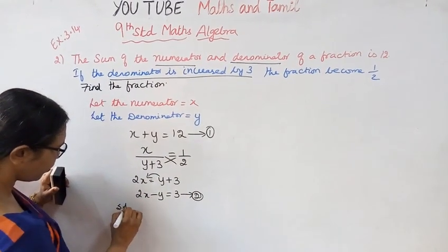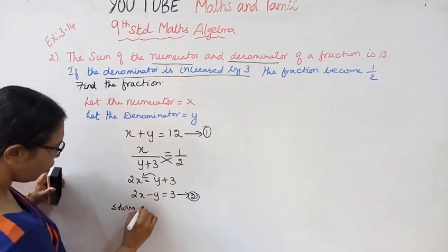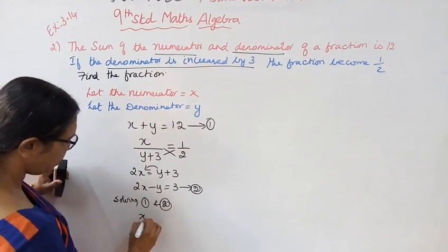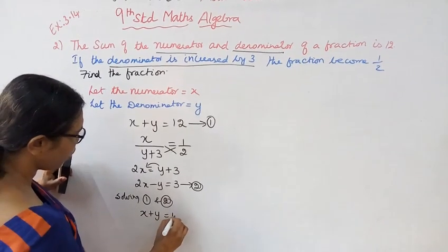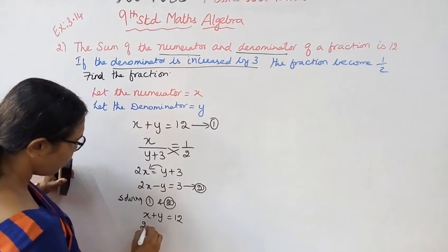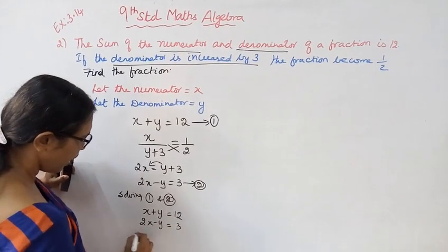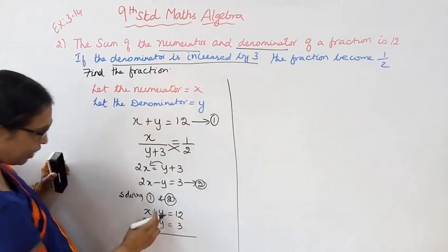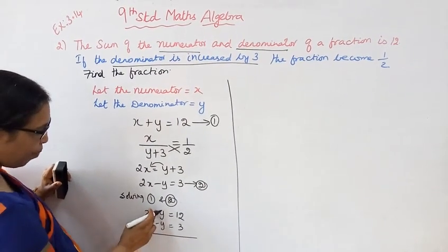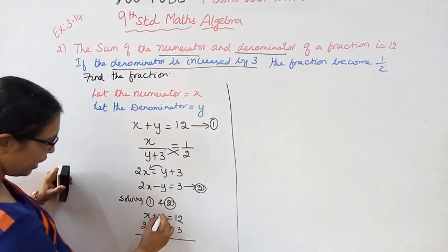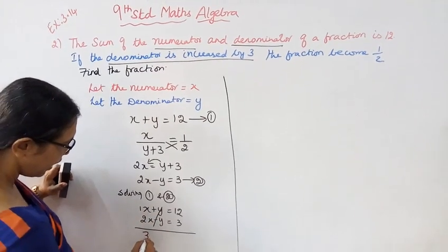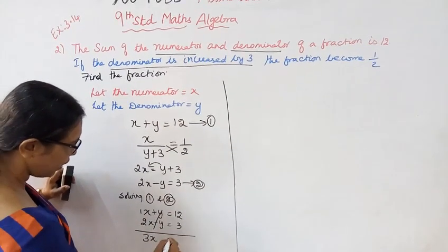Now solving 1 and 2. x plus y equals 12. 2x minus y equals 3. y and y are the same. Plus and minus cancel. 1x plus 2x is 3x. 12 plus 3 is 15.